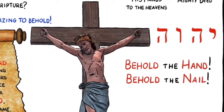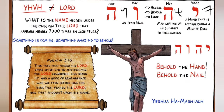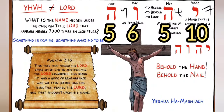A lot of times people will say, why does the name of God equal 26? It's because it's in these Hebrew letters, Yod-Heh-Vav-Heh, and that equals 10-5-6-5.